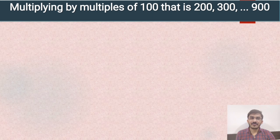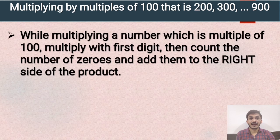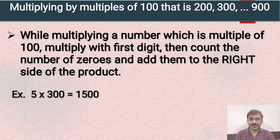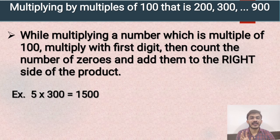Next topic is multiplying by multiples of 100 — that is 200, 300, 400 up to 900. The rule to keep in mind: while multiplying a number which is a multiple of 100, multiply the first digit and then count the number of zeros and add them to the right side of the product. For example, 5 multiplied by 300 — we multiply 5 with 3 only. So 5 threes are 15, and we add two zeros at the end of the product.